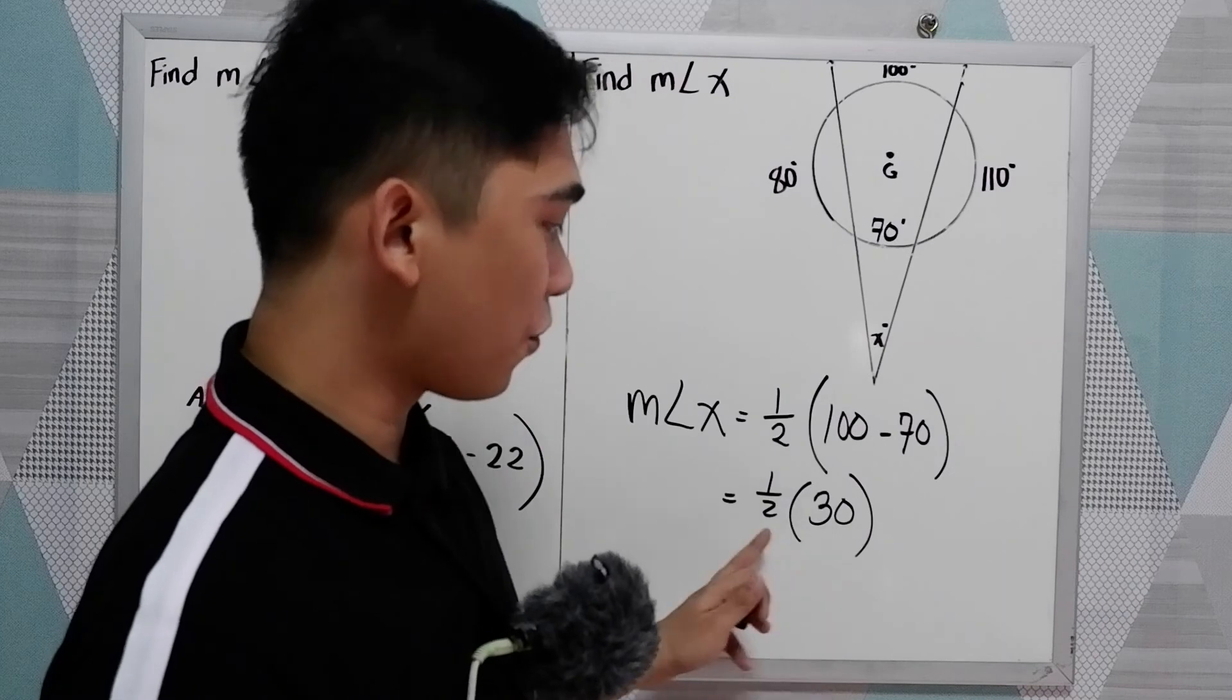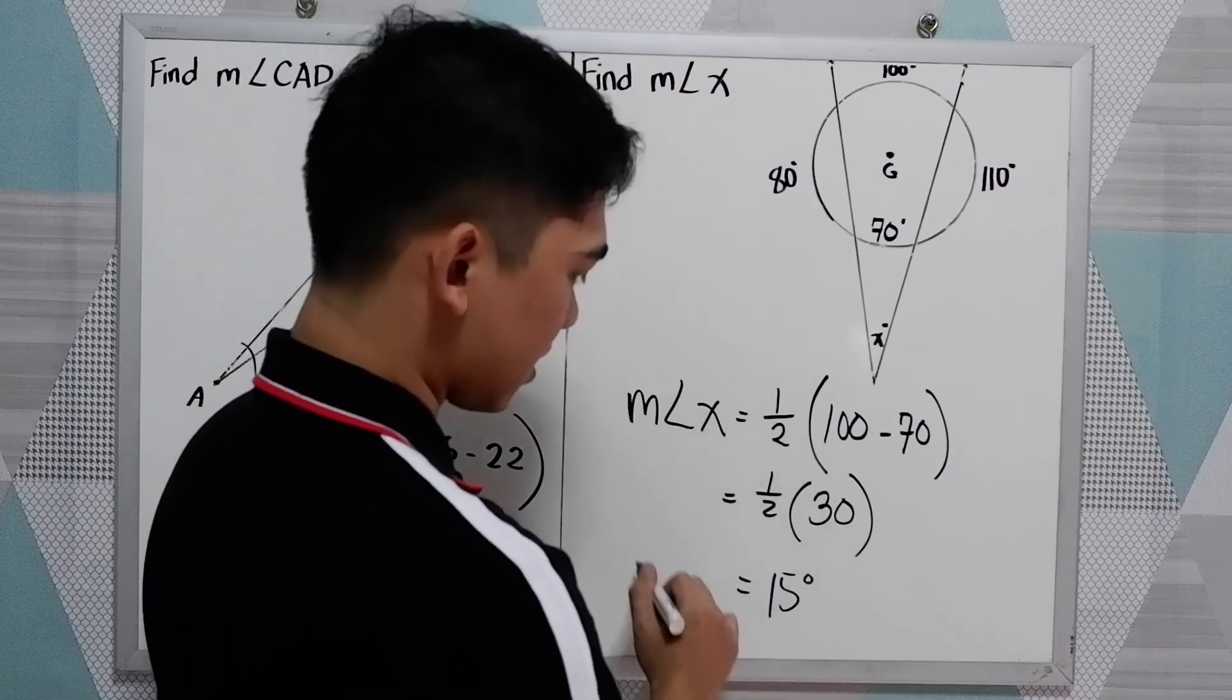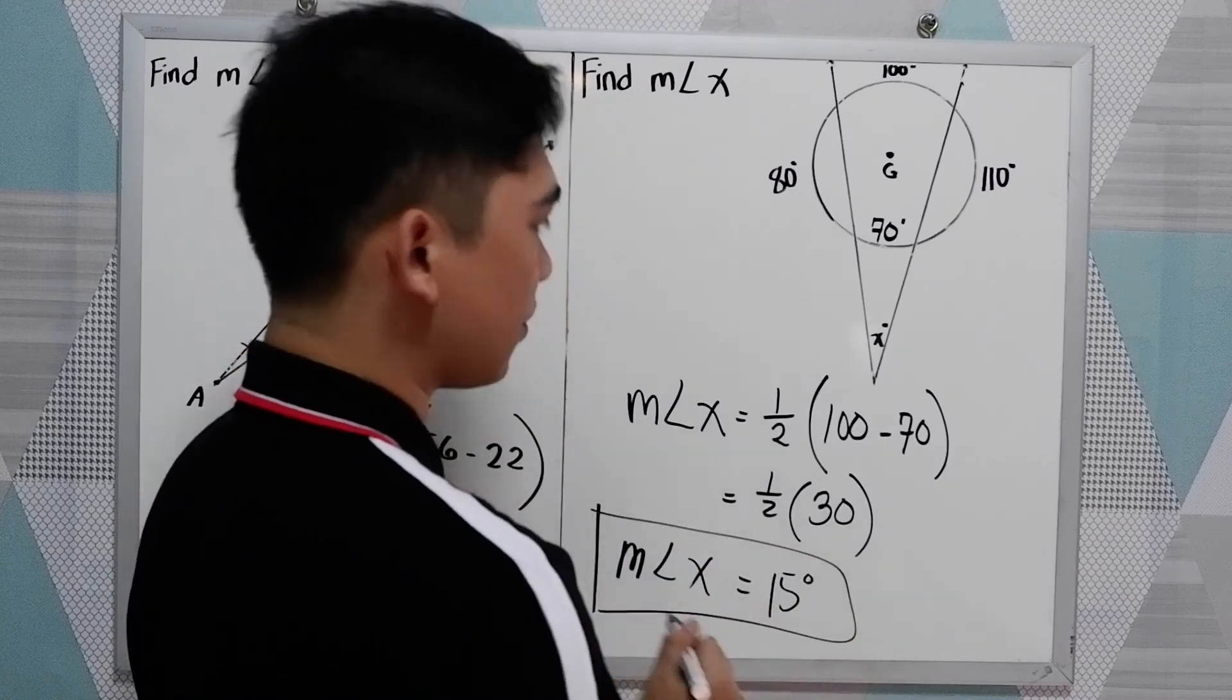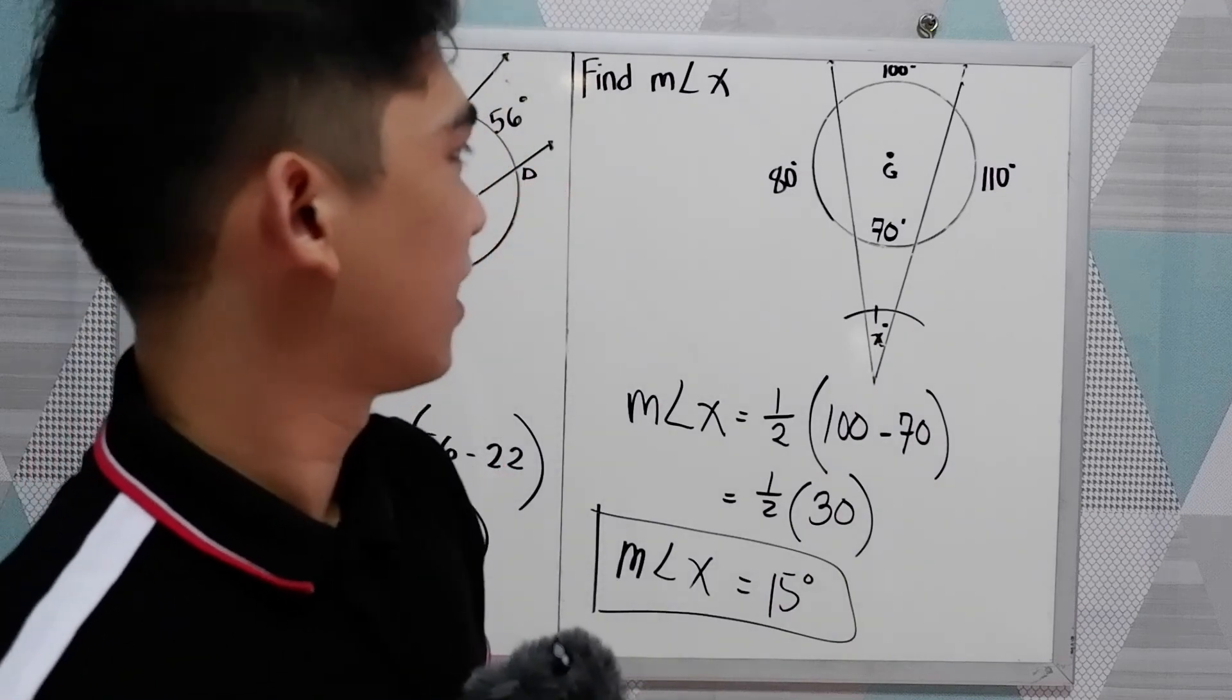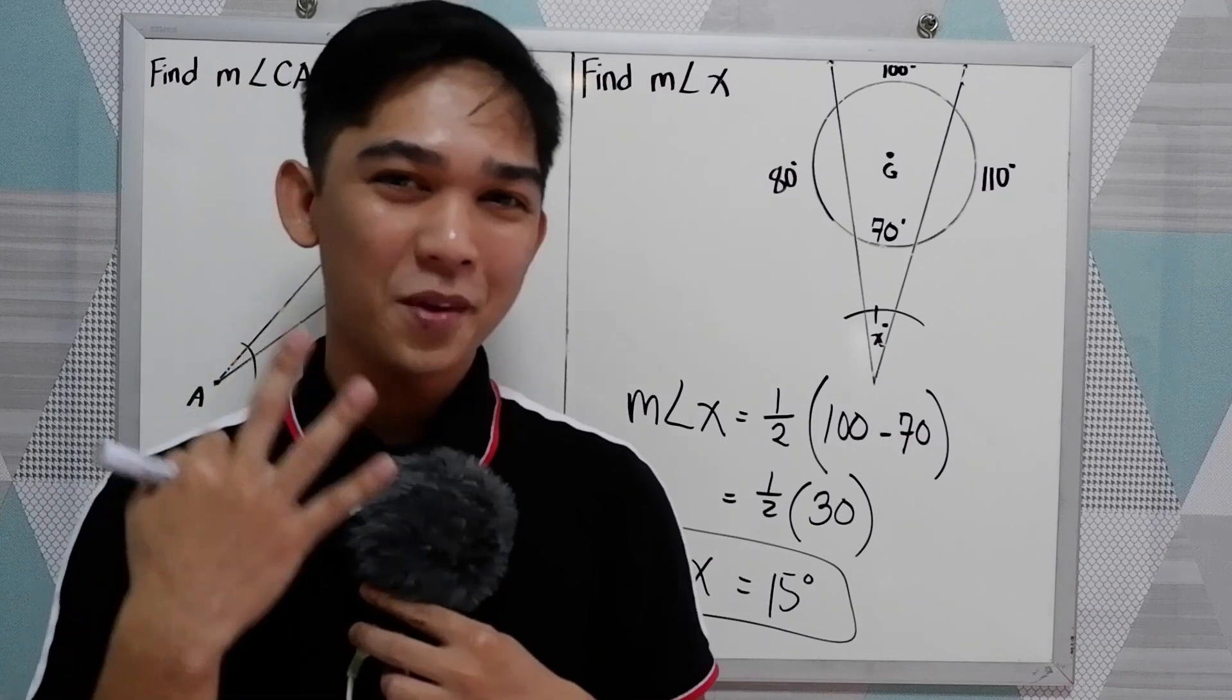Now half of 30 is 15 degrees. So the measure of angle X is 15 degrees. So this is 15 degrees. That's the application of our theorem number three.